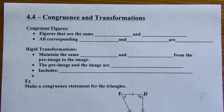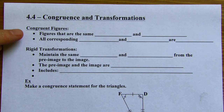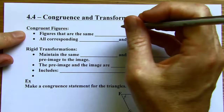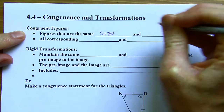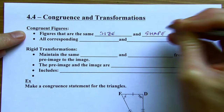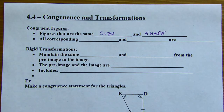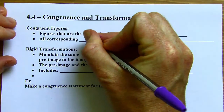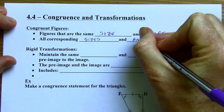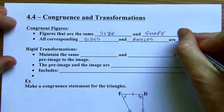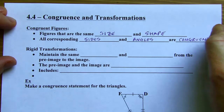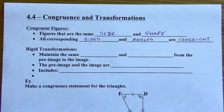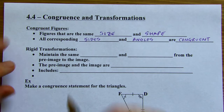Congruent figures are figures that are the same size and shape. Since they're the same size and shape, all of the corresponding sides and angles are going to be congruent. All the sides being the same length means they're going to be the same size, and all the angles being congruent gives you the same shape.